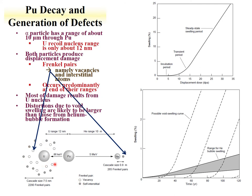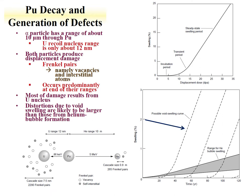Frenkel pairs are formed, where you have vacancies and interstitials. Vacancies are holes where an atom should be, and an interstitial is an atom sitting in a place where it shouldn't be. These pairs are formed, they coalesce together, and with a shorter range but many more Frenkel pairs — about an order of magnitude more — are produced from the uranium recoil.